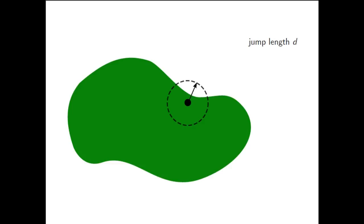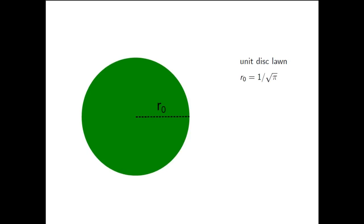This sounds like quite a simple question. However, it turns out to be surprisingly complicated. For example, you might think that, at least for small jumps, a round lawn would be the best choice. But in our paper we prove analytically that a round lawn is never best, even for very small jumps.